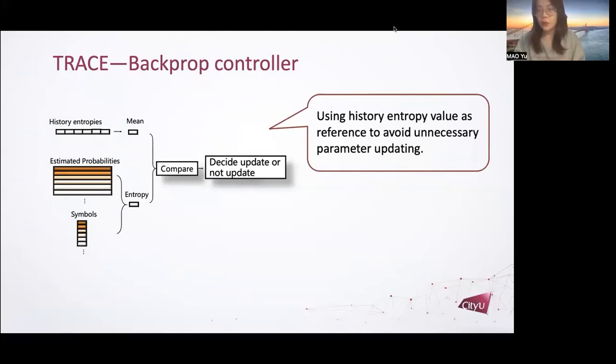First, we design a cache that stores the most recent entropy values. When current entropy is larger than the average of the cache, it means the model is not familiar with current data and it should update its parameters. If current entropy is lower than the average, it means the model is familiar with current data and the model doesn't have to update its parameters.